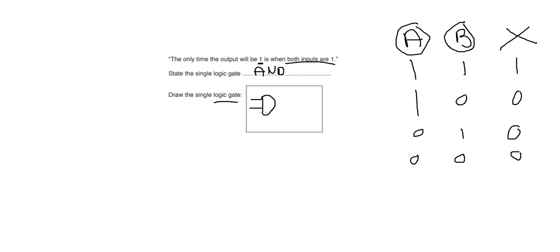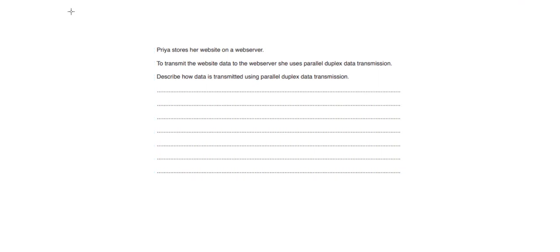To draw the AND gate you need one line and another line going into this flat-backed D-shape, which is the AND gate symbol. The lines represent circuit connections — this is input A, input B. You definitely need all three lines: the two input lines and the output line.